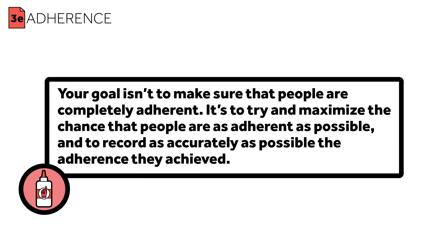If your study involves a drug, you can check to see how many pills people took by looking at their pill bottles. Even better, you can test them to see what their drug levels are. Sometimes you can get participants to help with this — they could record a food diary to keep track of what they ate, in accordance with or in violation of their prescribed diets. If exercise is the intervention, participants could wear accelerometers to keep track of their activity. Your goal isn't to make sure that people are completely adherent; it's to maximize the chance that people are as adherent as possible, and to record as accurately as possible the adherence they achieved. Taking the time to do so will help future scientists who build upon your work reproduce your results as closely as possible.